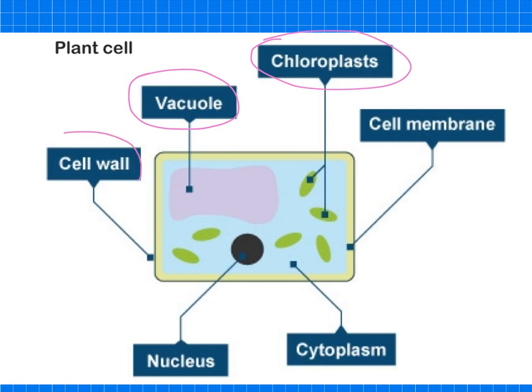And lastly is the cell wall. The cell wall strengthens the cell and it is actually made of a substance called cellulose. Algal cells also contain a cell wall. These are the three main differences between plant cells and animal cells.